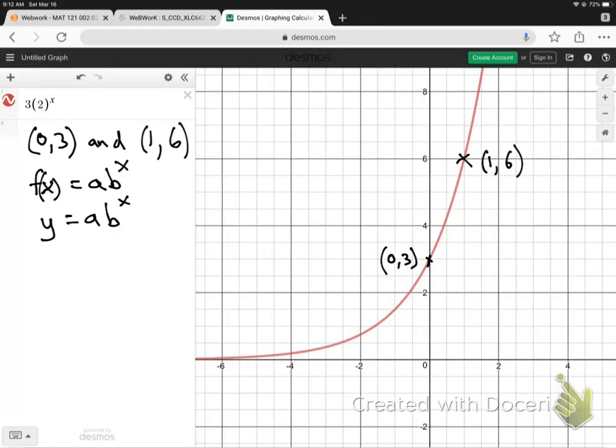We want to find an exponential function that includes these two points: (0,3) and (1,6). So we're looking to find the exponential function represented by this graph.